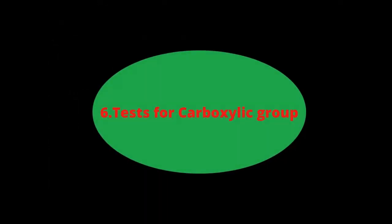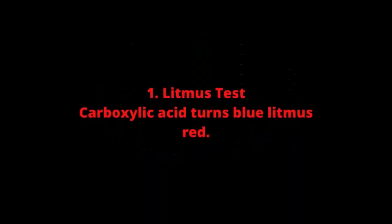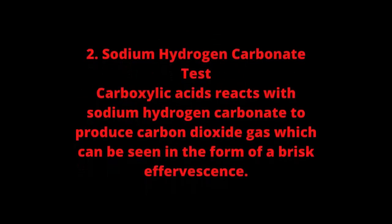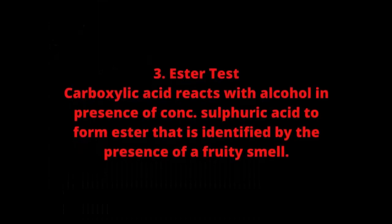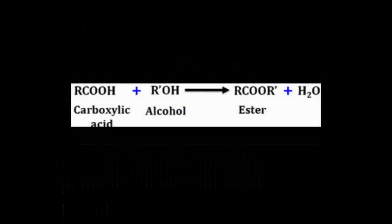The carboxylic group can be tested by the litmus test, where blue litmus paper changes to red. Sodium hydrogen carbonate is a suitable test for carboxylic acids — it releases CO2 gas with brisk effervescence. The ester test can also be conducted for carboxylic acids, similar to alcohols, where it gives a fruity smell confirming the ester formation.